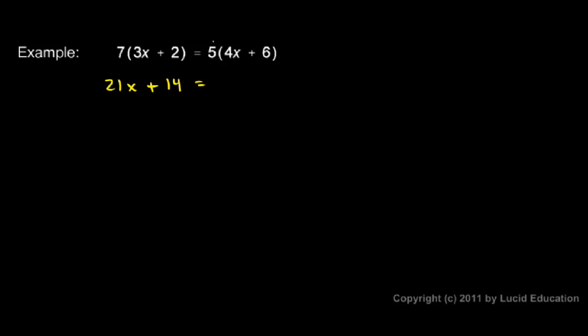On the right I have to multiply the 5 times the 4x and by the 6. So 5 times 4x is 20x and then 5 times 6 is 30. So I have 20x plus 30 on the right.